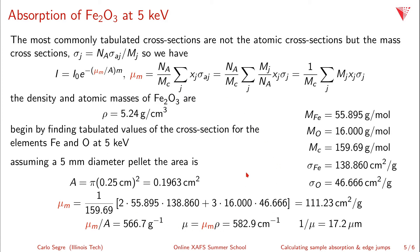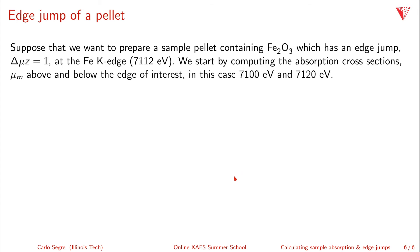Now, what about the absorption edge jump? That's an important quantity when making a pellet — you need to know your total absorption cross-section, because sometimes it's so large you can't make a pellet with the right edge jump and have to go to fluorescence. Let's calculate the edge jump of a pellet containing Fe2O3 with a delta mu times z of 1 at the iron K-edge at 7,112 eV. We compute absorption cross-sections mu sub m above and below the edge, typically about 10 eV either way: 7,100 eV and 7,120 eV.